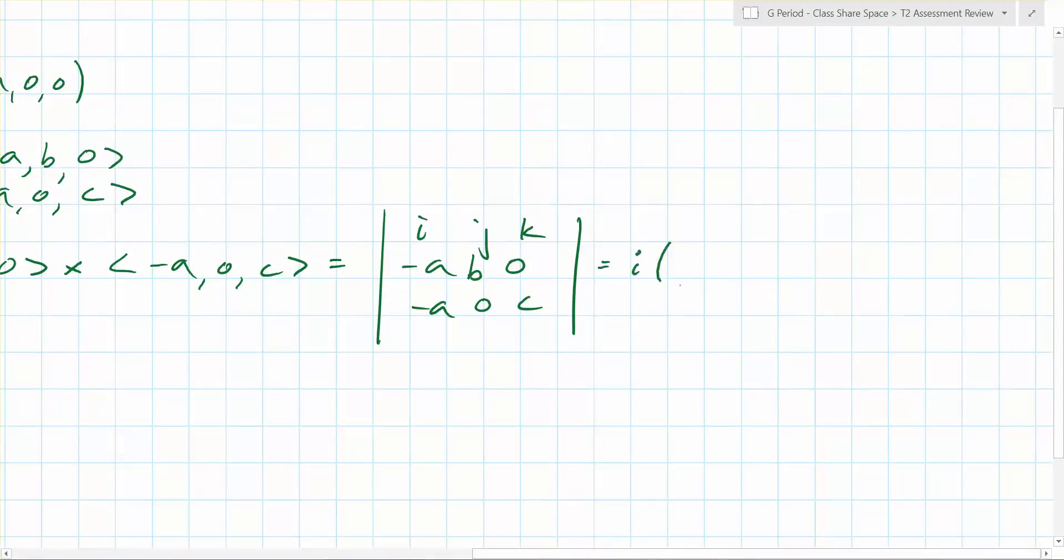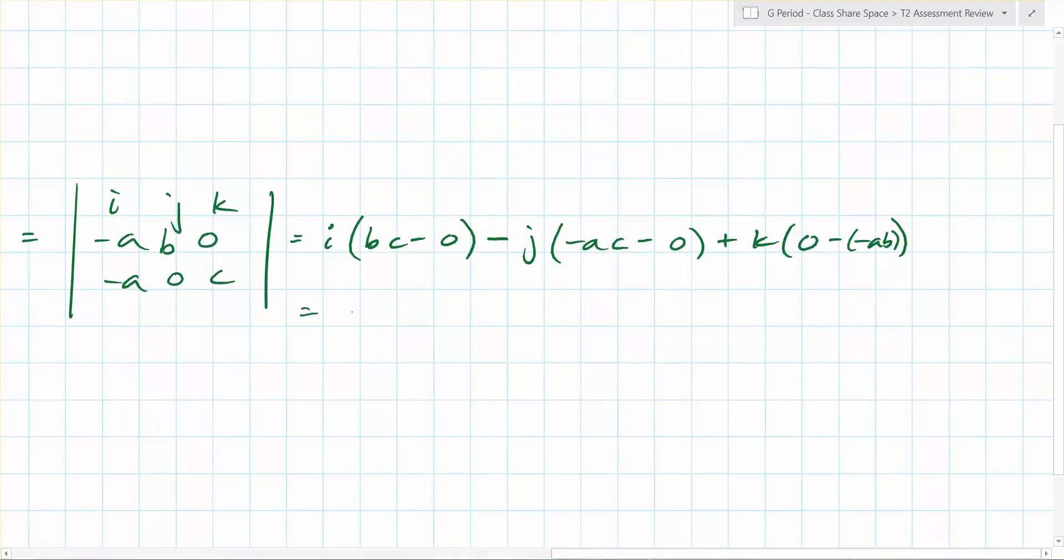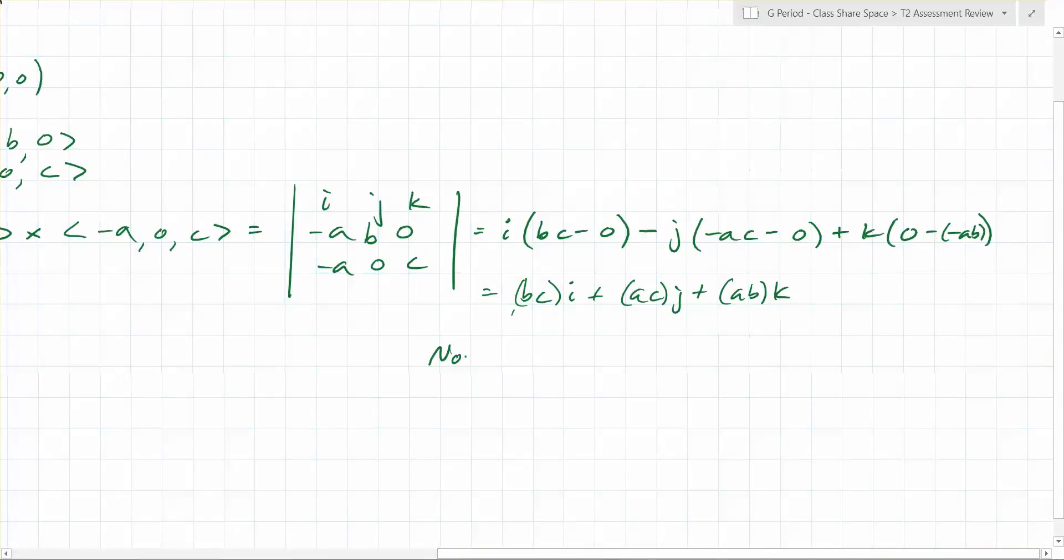What's the relationship between vectors that go opposite directions? They're just negative one another. Exactly. It doesn't matter. So it's going to be equal to i times bc minus 0 minus j times negative ac minus 0 plus k times 0 minus negative ab. You have to be real super careful with this. So you end up with bci plus acj plus abk. So what is your normal vector? Our normal is going to be (bc, ac, ab).